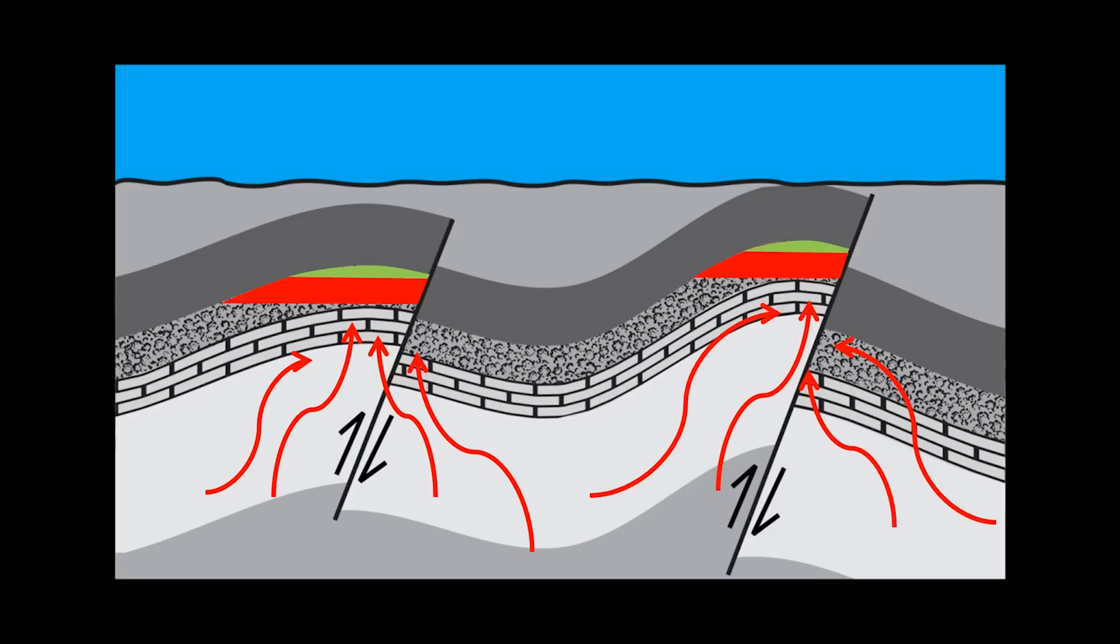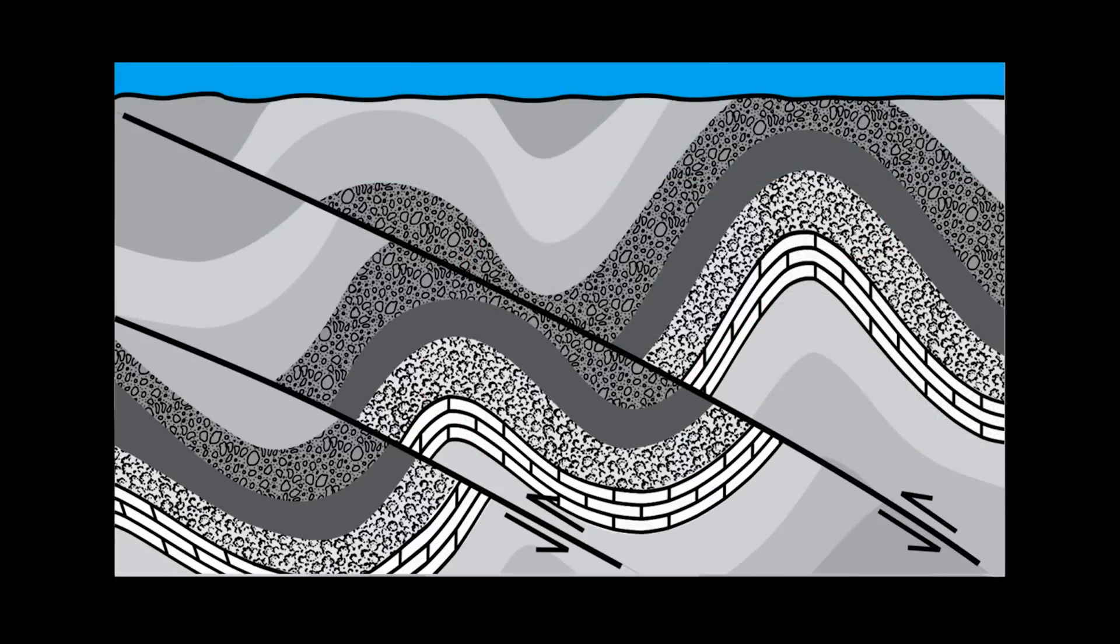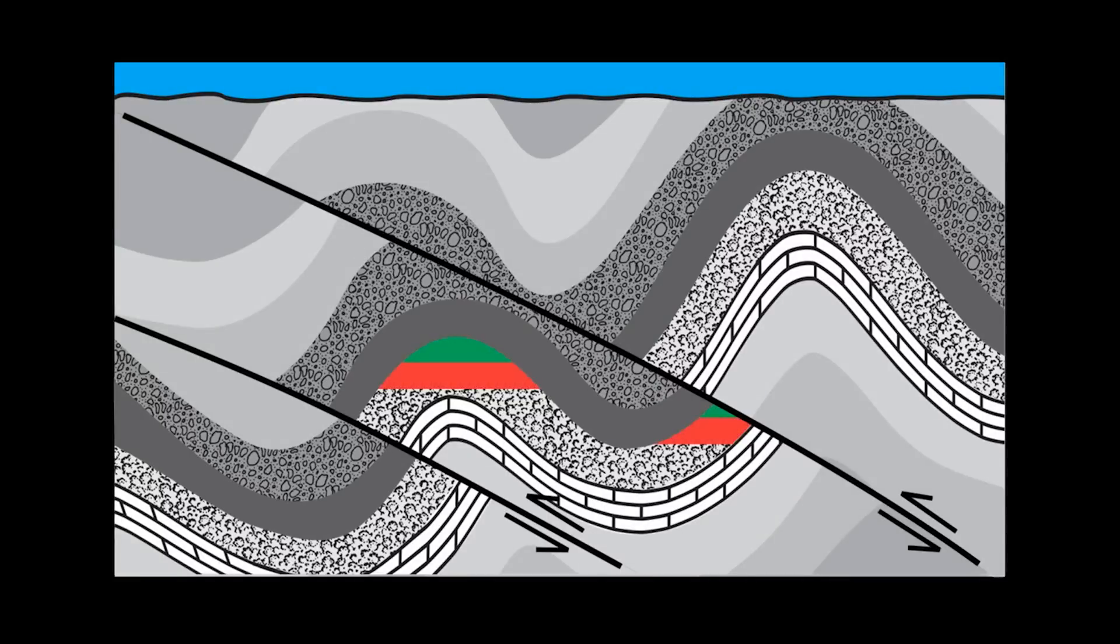However, if the faults are not sealed, hydrocarbons can escape. Rocks that are more plastic will seal better than brittle rocks. In an area where thrust faults occur, hydrocarbon accumulation is once again dependent on fault sealing and anticlinal traps remaining intact and sealed.